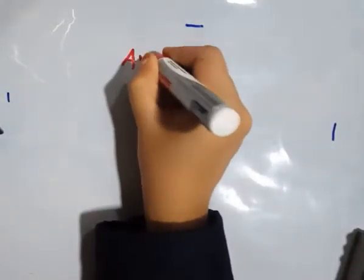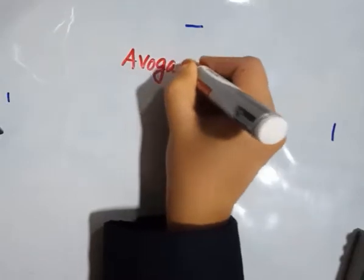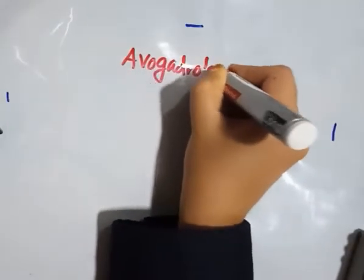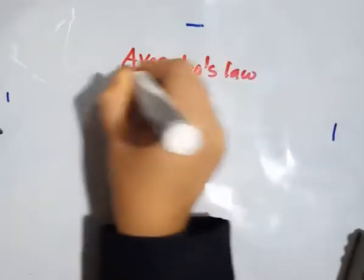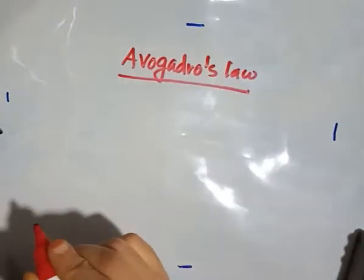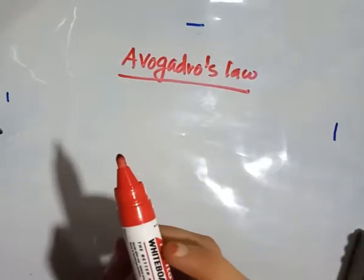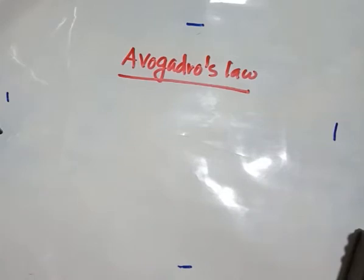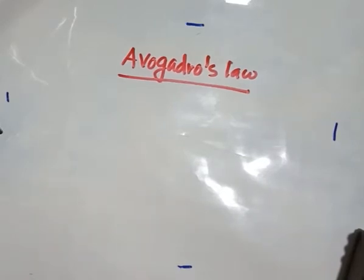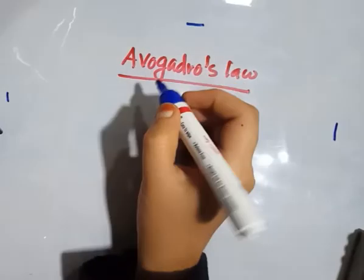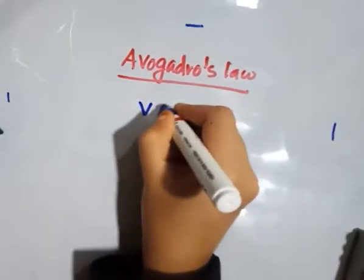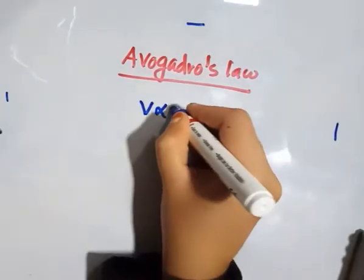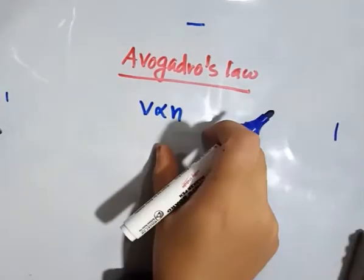Next, we have to discuss Avogadro's law. Avogadro's law states that at constant temperature and pressure, the volume of a gas is directly proportional to the number of moles of the gas present.